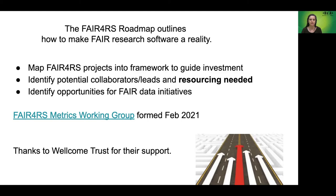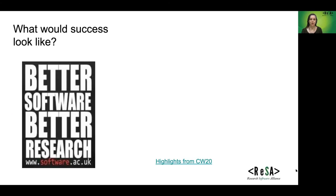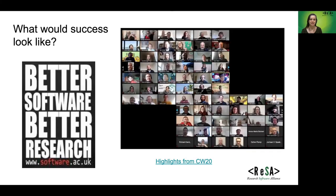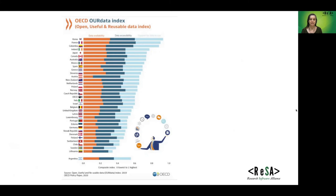A FAIR for Research Software Metrics working group formed last month. So what might success look like? We can sum it up in the motto of the Software Sustainability Institute: better software means better research. Perhaps another measure is the size of the smiles on the faces of people attending sessions like CW20 this time last year, and whether this work will enable them to find better outcomes for their software. Perhaps success could also be measured by a software equivalent of the OECD OUR Data Index, which measures the openness, usefulness and reusability of data. In what year will there be a software equivalent to look at the openness of software, particularly in the research sector?